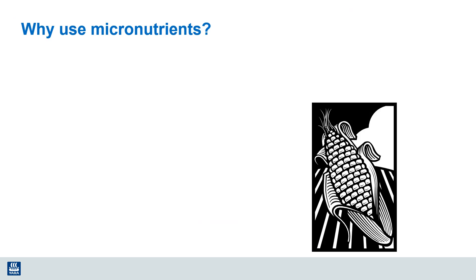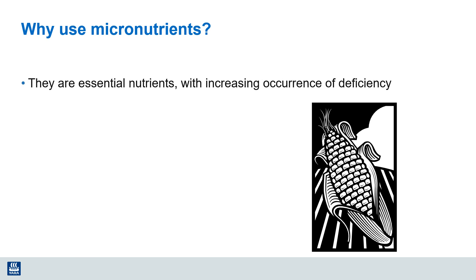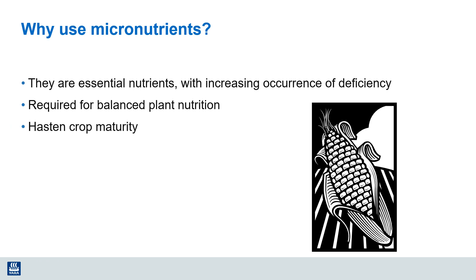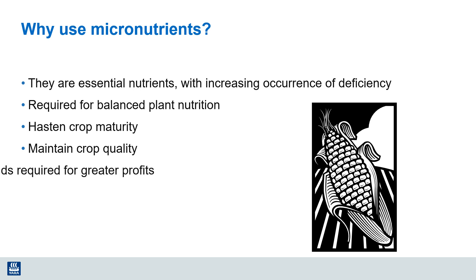As a quick review, let's recall that micronutrients are essential plant nutrients, and we're seeing more occurrences of deficiency these days. They have an essential role in providing balanced nutrition, where if any single nutrient is lacking, the plants can't effectively use any of the other nutrients. The lack of micronutrients often delays plant maturity and can cause damage in crop quality too. And the higher yields and profits that we're targeting these days requires an adequate supply of all the nutrients, including micronutrients, that are present in the root zone during the entire growing season.